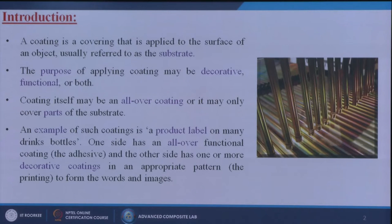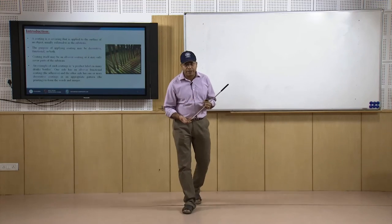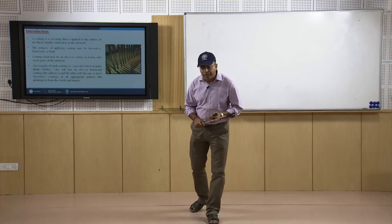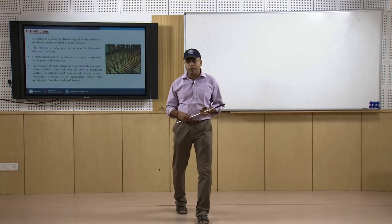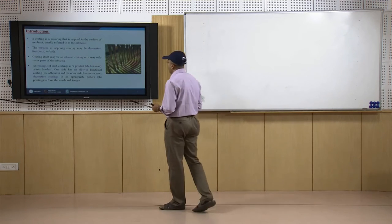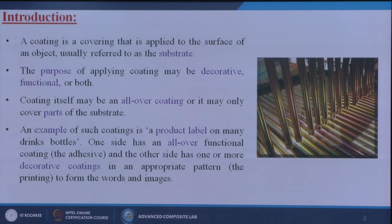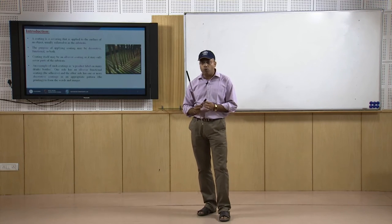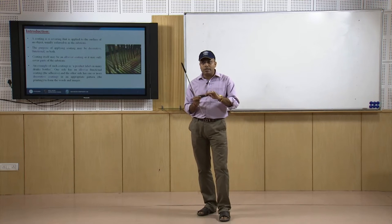The purpose of applying a coating may be decorative, functional, or both. Decorative means it should look more attractive or lucrative, while functional means it can enhance mechanical properties, chemical properties, thermal properties, or both. The coating may be an all-over coating or it may only cover parts of the substrate — it depends upon the application and uses whether we coat the entire surface or any specific surface.